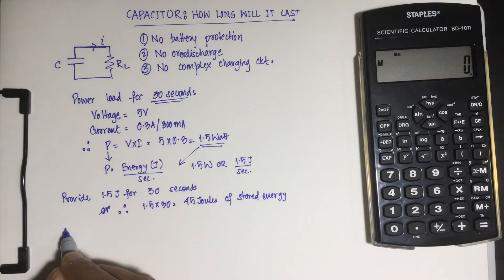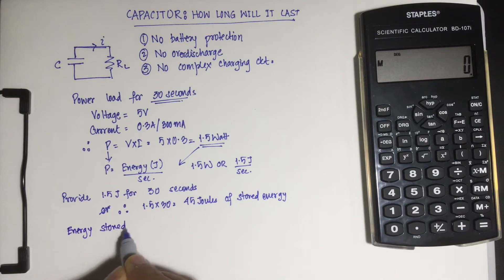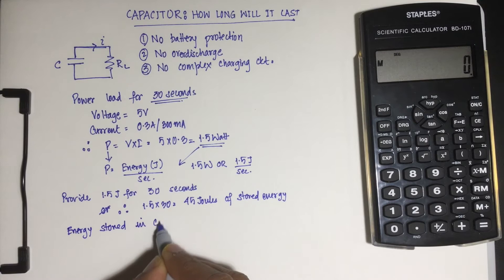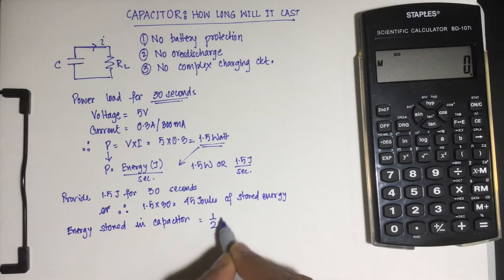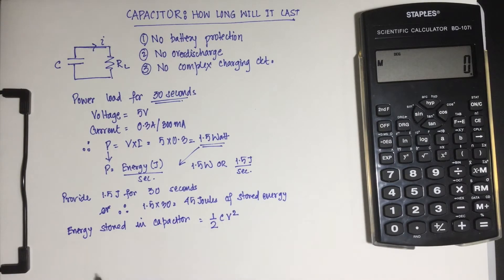Now energy stored in a capacitor is given as: energy stored in a capacitor is equal to half C V squared. So V is the voltage to which the capacitor is charged.